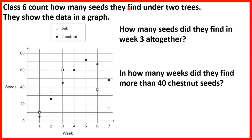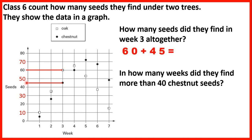Class 6 count how many seeds they find under two trees and show the data in a graph. How many seeds did they find in week 3 altogether? We can see that with each line we're counting up in tens. Going up from week 3, there were 60 oak seeds. Drawing a line across for chestnut seeds, that's halfway between 40 and 50, so 45. 60 plus 45 is 105, so they found 105 seeds in week 3 altogether.